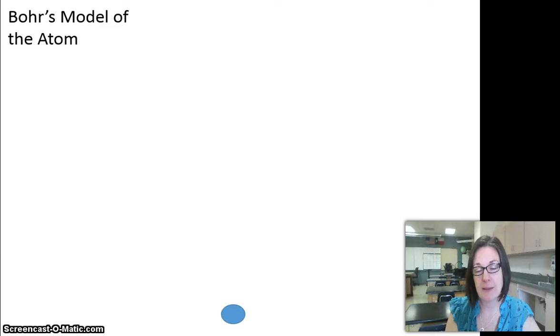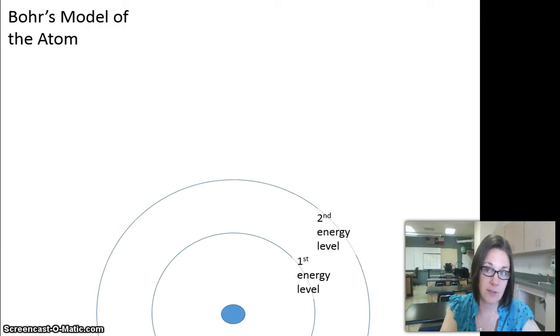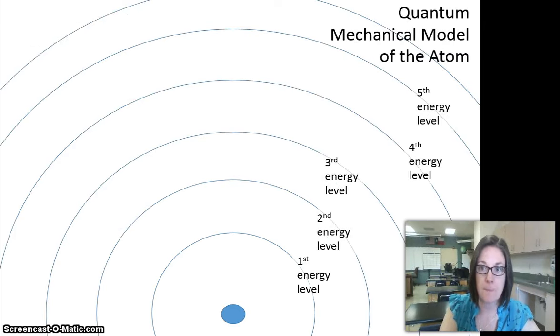In Bohr's model of the atom, where we left off at the end of the atomic theory unit, he found that electrons are in energy levels that go concentrically out from the nucleus. What we now know is that the quantum mechanical model establishes within those energy levels sublevels.